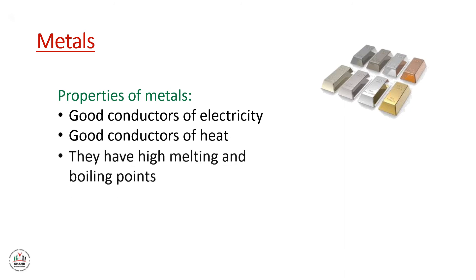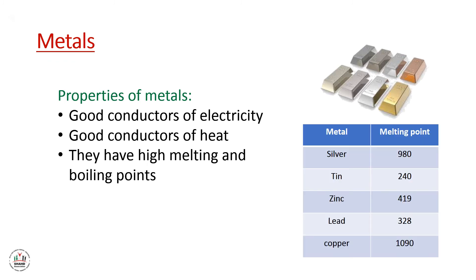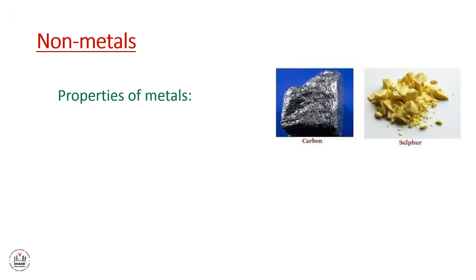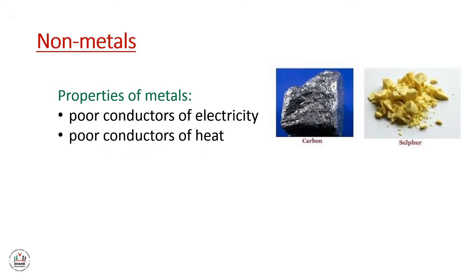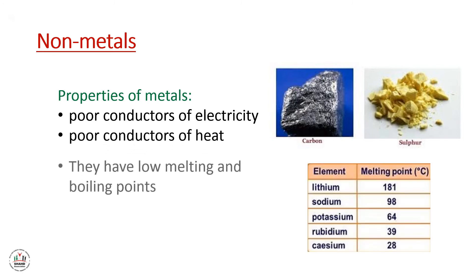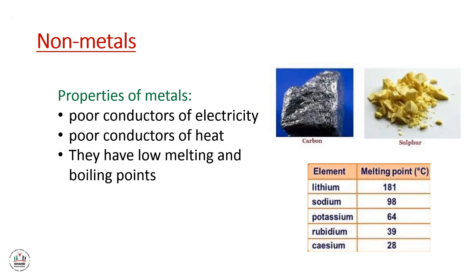Metals have high melting and boiling points, as you can see in the table. Non-metals, by comparison, have low melting and boiling points compared to metals. Non-metals also have low density.